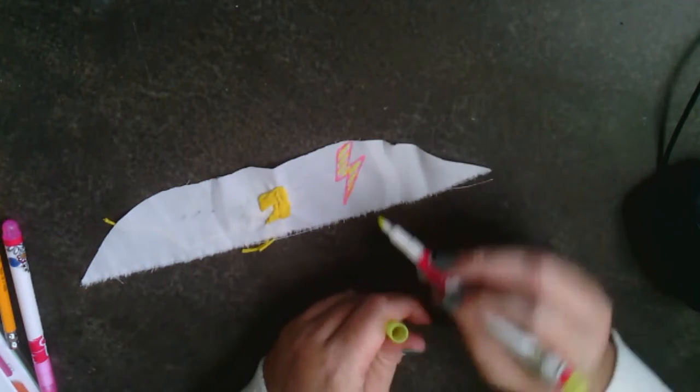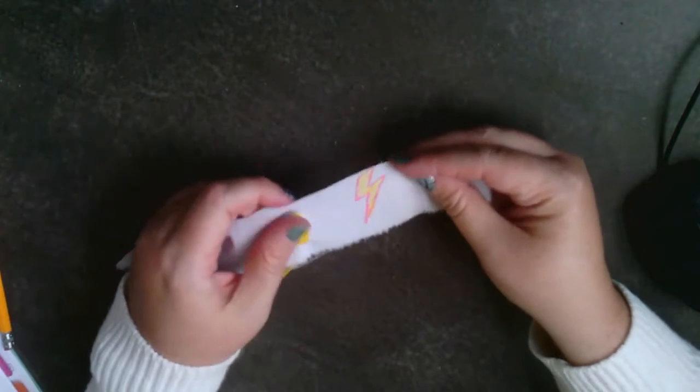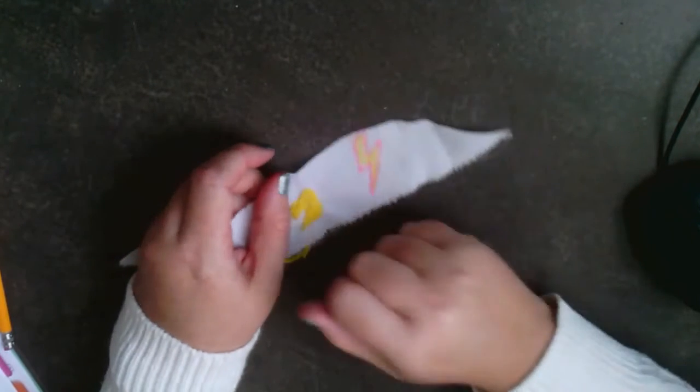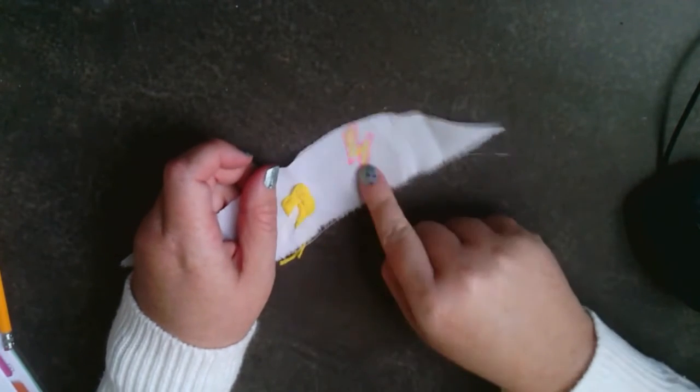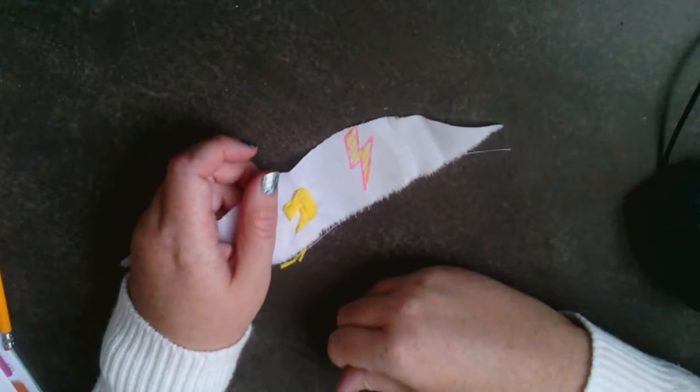Now, your marker has to be heat set. So that means that you will have to pop it in the dryer on high for like 30 minutes, or I have an iron that I can iron. Don't wash it until you heat set it. And that's pretty much it. Fabric marker is really straightforward.